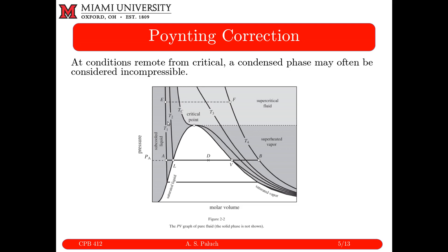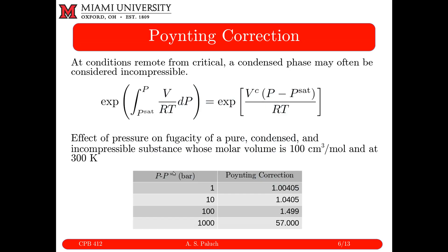In terms of simplifying the Poynting correction for a compressed liquid: in the pressure-volume phase diagram, the subcooled liquid region shows isotherms that are essentially vertical when well removed from the critical point. This means DV/DP ≈ 0 at constant T, which is equivalent to saying the volume is constant. This allows V to be pulled out of the integral along with RT, giving the Poynting correction as exp(VC × (P − PSAT) / RT). This is the more common form you'll see.